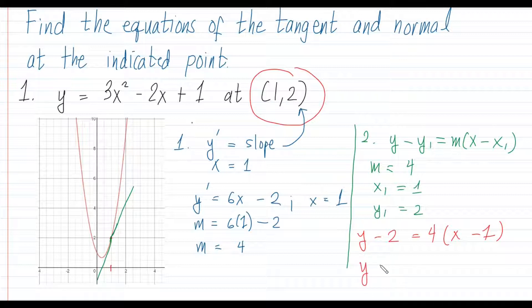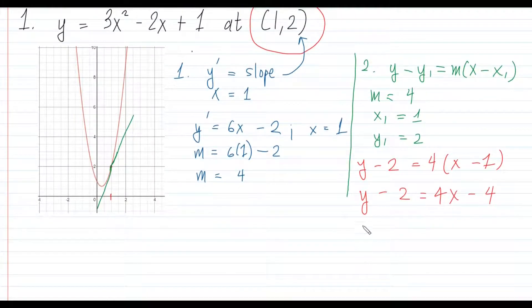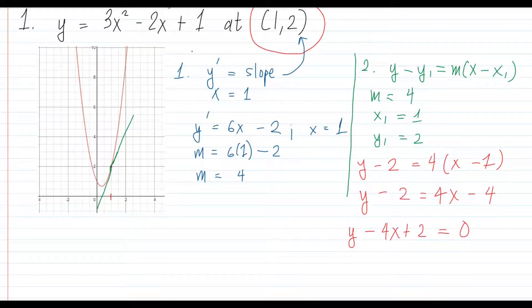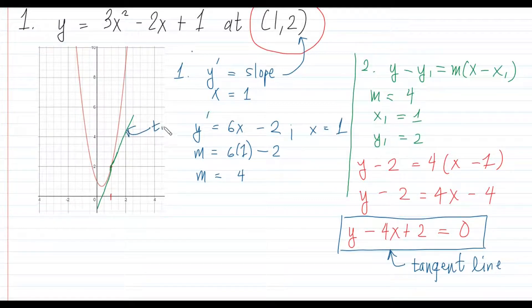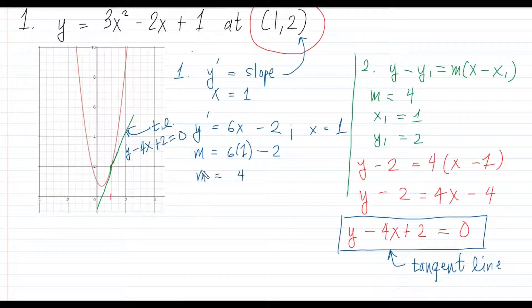Simplifying y − 2 = 4(x − 1), when transposed the constant becomes +2, giving us the equation of the tangent line: y − 4x + 2 = 0. That green line on the graph is your tangent line.